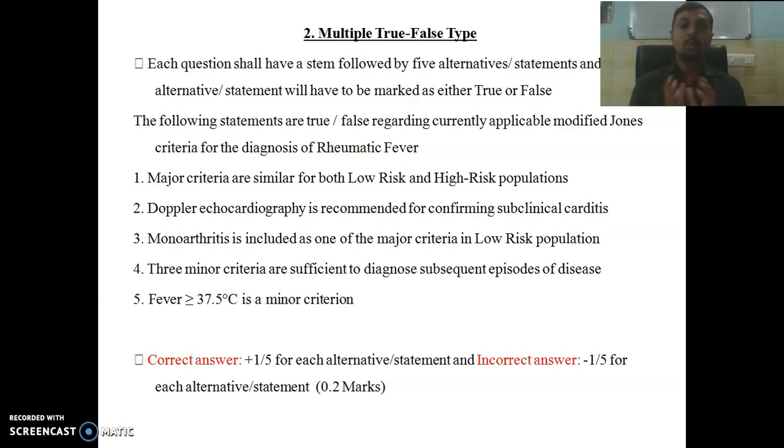Then comes the true and false type. Dear friends, here they will give one statement like you can see the criteria for correct diagnosis of rheumatic fever. Like this, four to five statements will come. You have to mark it whether it is true or false. If you go for the correct answer you will get 0.2 marks and if you are wrong you will lose minus 0.2 marks.